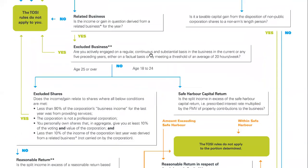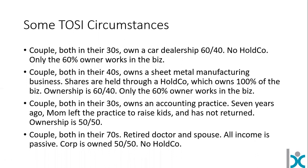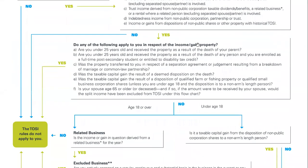And then we will look to our last scenario, which is our retired couple. I'm sure some of you can see this coming already. We've got a couple both in their seventies — retired doctor and spouse — all income passive, corporation 50-50, no holding company in place. Again, same start we've always had: yes, adult resident in Canada; yes, we have a non-public corporation with taxable dividends. And right here we're going to see the following apply.